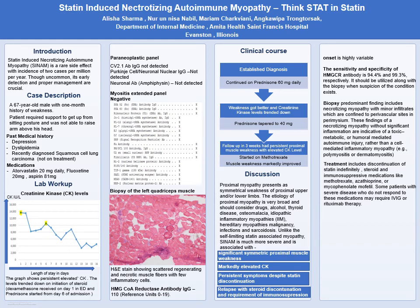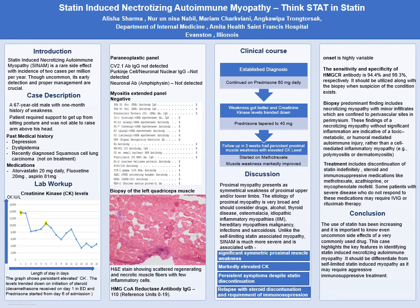Treatment includes indefinite discontinuation of the statin, along with steroids and immunosuppressive medications such as methotrexate, azathioprine, and mycophenolate. If these do not help, IVIG and rituximab may be considered. Statin use has been increasing, and awareness of this uncommon side effect of a very commonly used drug is important. This case highlights the key features of identifying statin-induced necrotizing autoimmune myopathy, and hopefully will help you reach a diagnosis and guide management. Thank you.